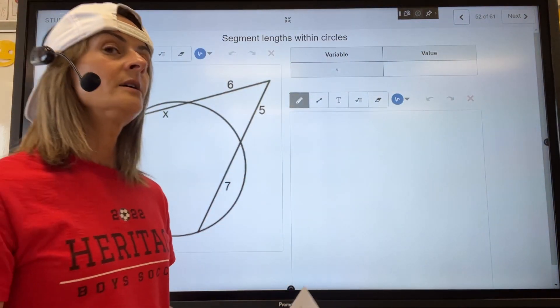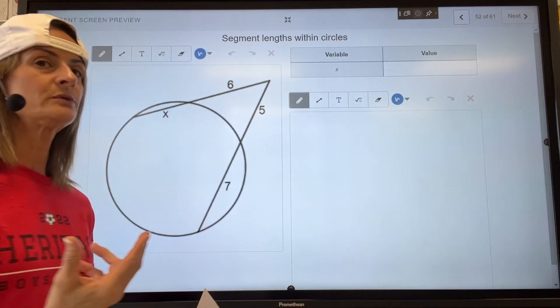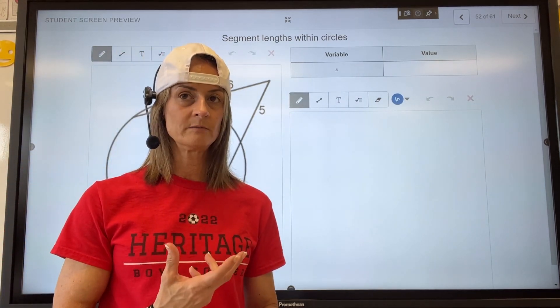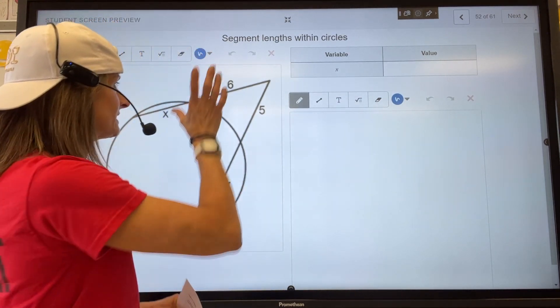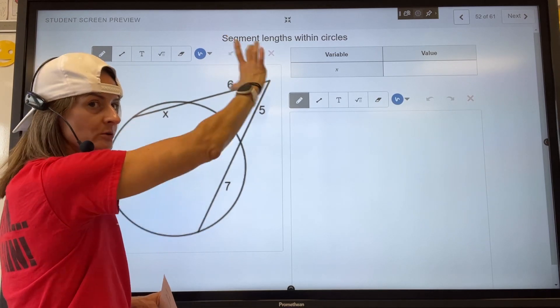Now, this one gets confused with the intersecting chords that we did just a couple videos ago, where we take the two numbers and we multiply and set them equal to the others.